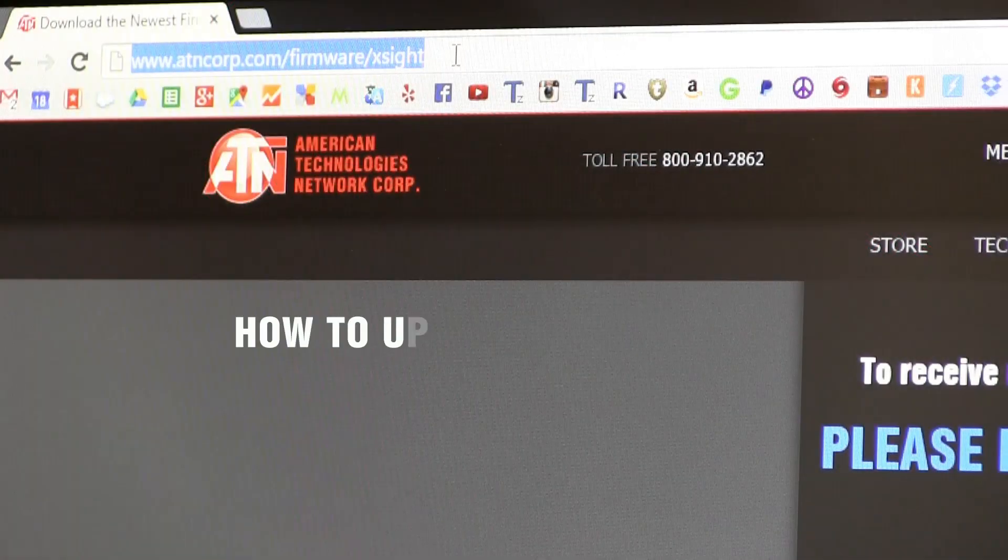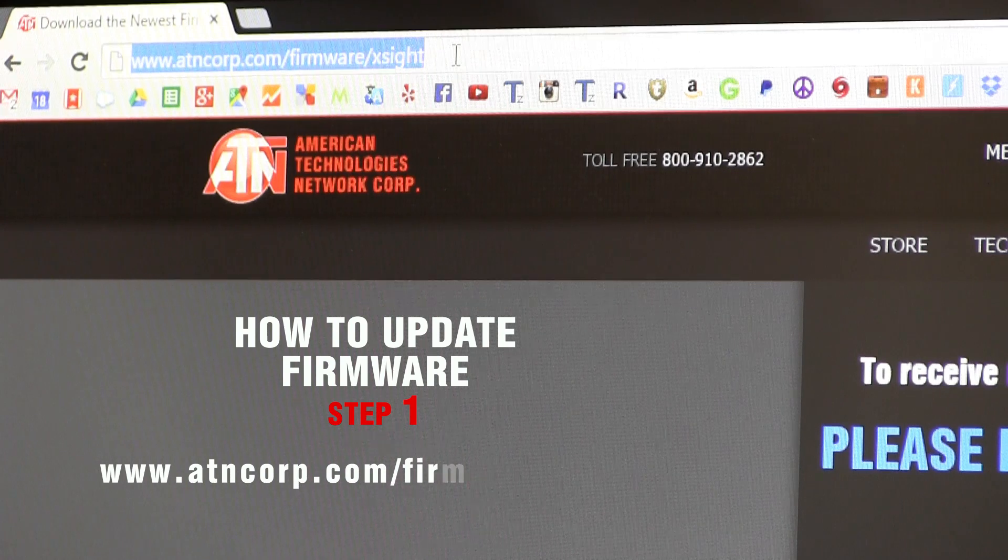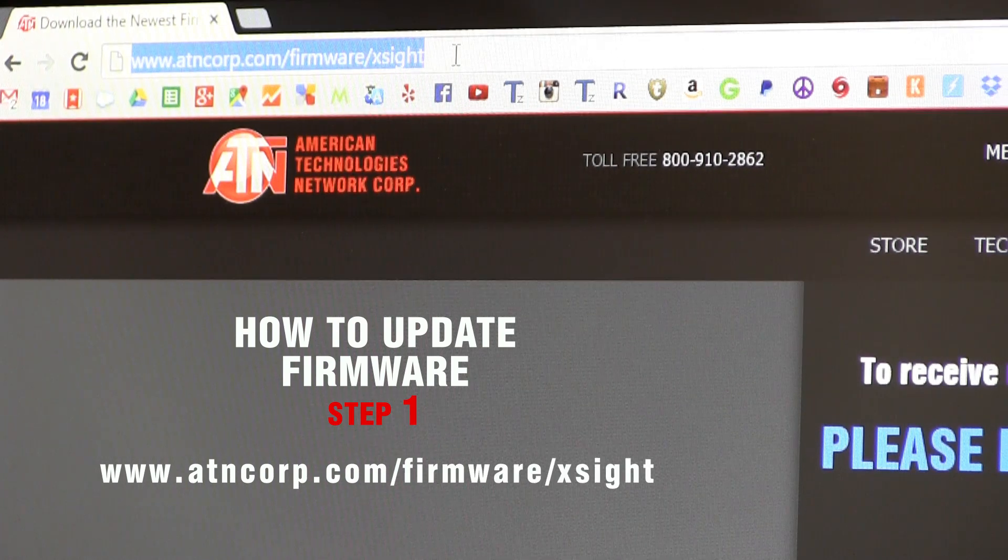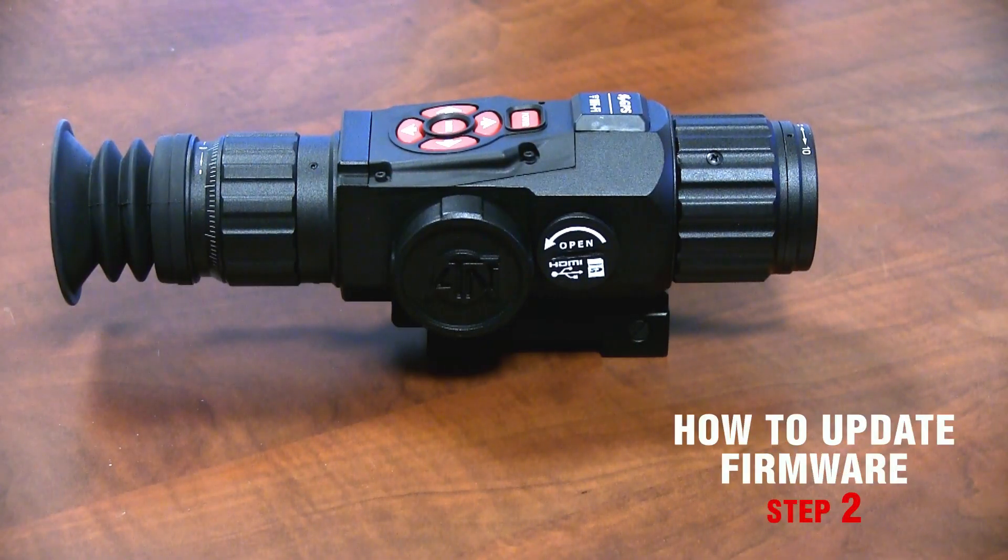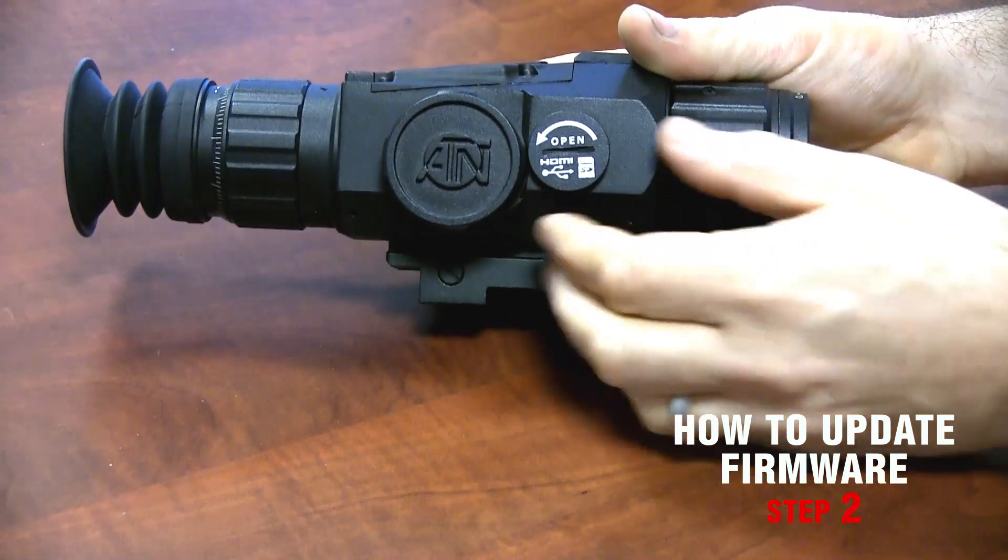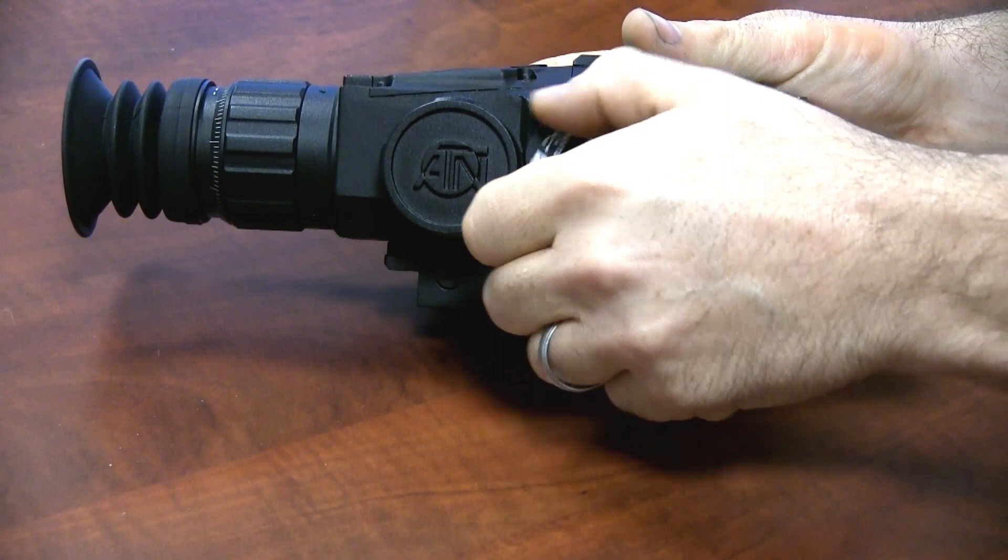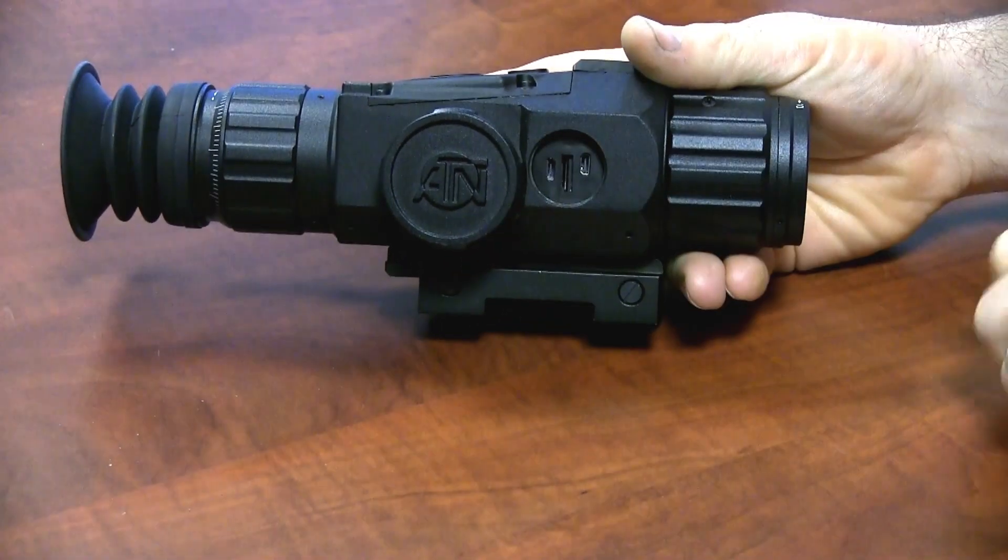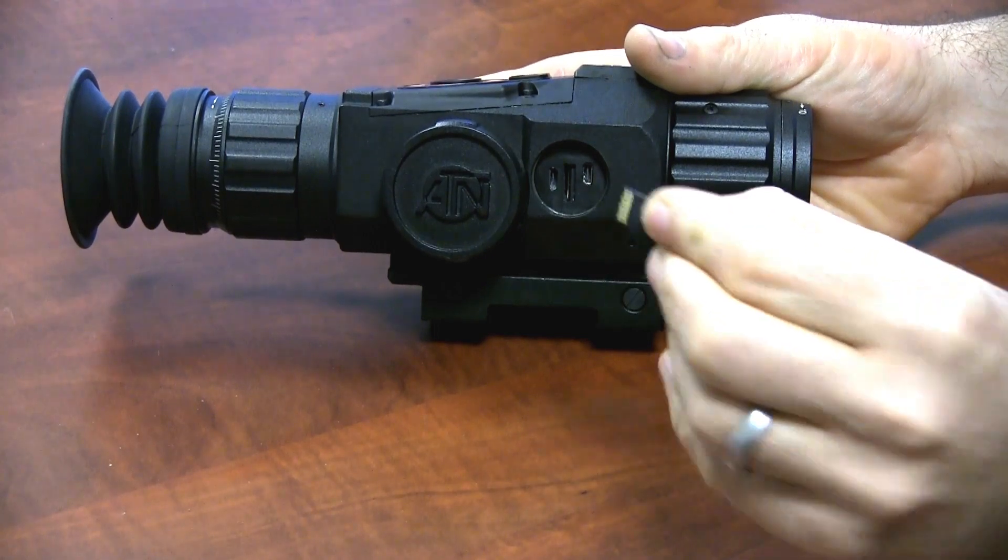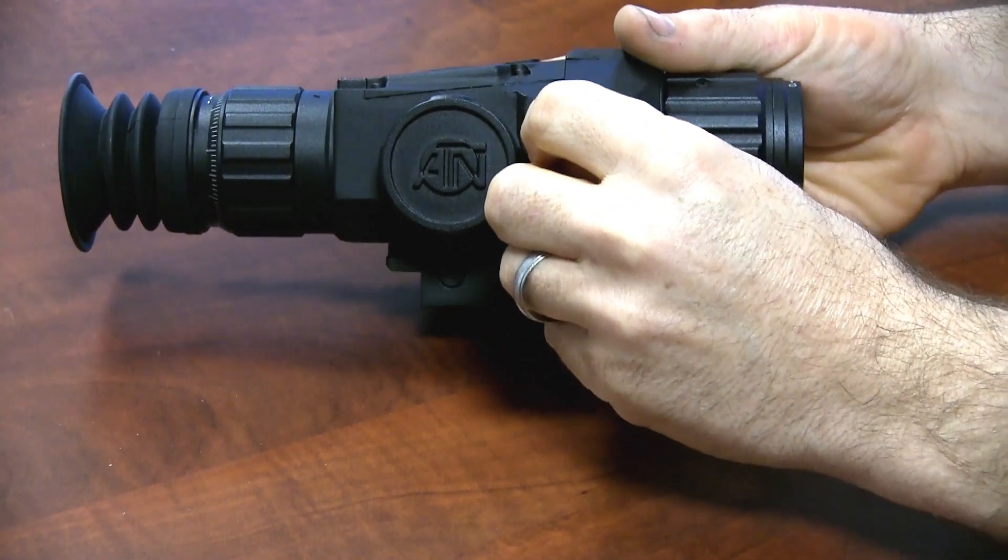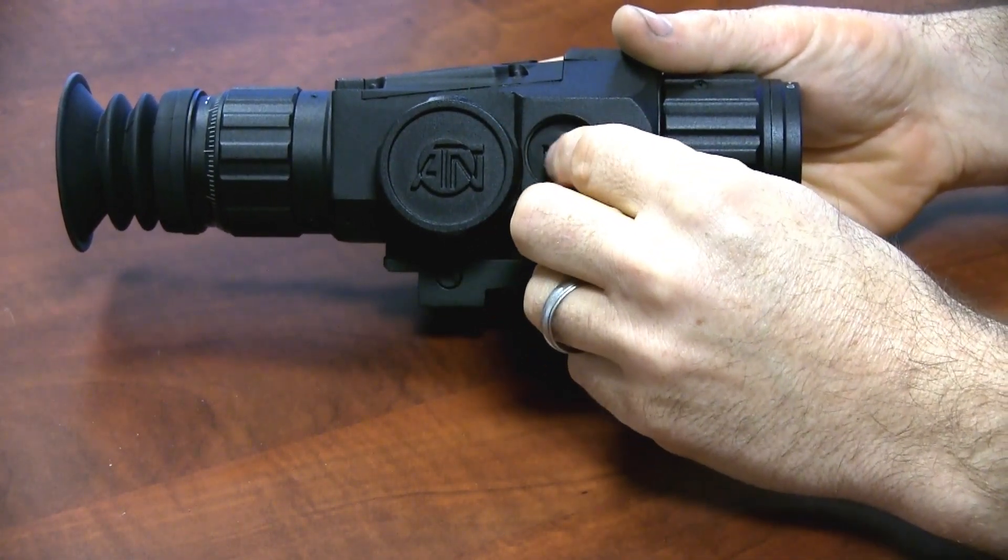To update your firmware, visit www.atncorp.com forward slash firmware forward slash X-Sight. Once you've downloaded the firmware onto your SD card, simply insert your SD card into the X-Sight by removing the cover, covering the ports, and remember to insert the micro SD card with the teeth facing downwards.